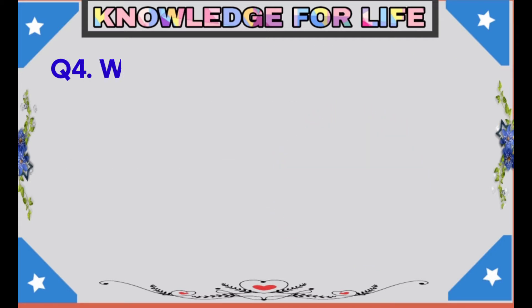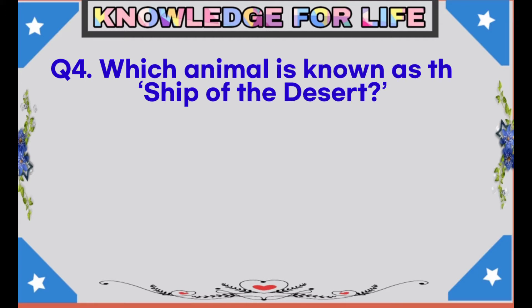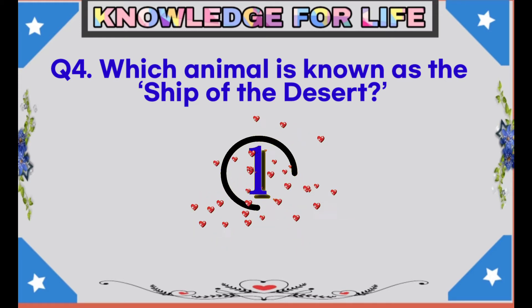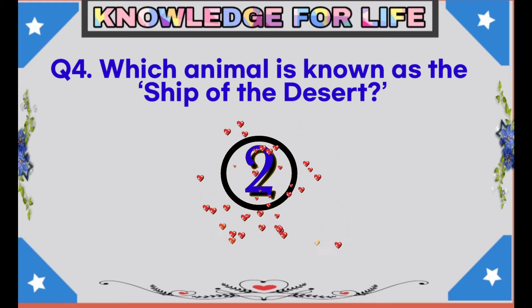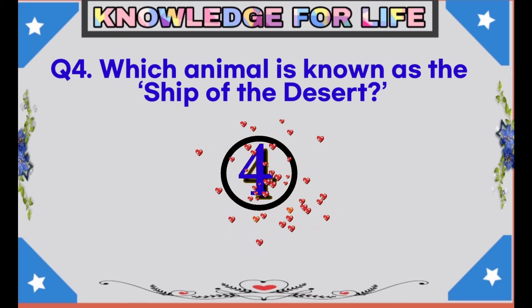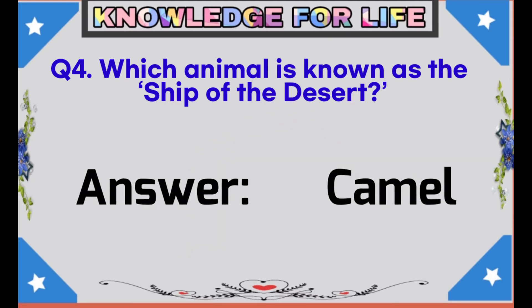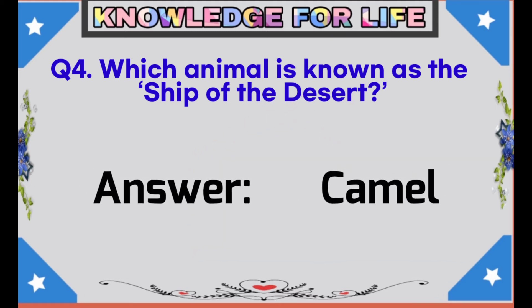Question number 4: Which animal is known as the ship of the desert? Answer: Camel.